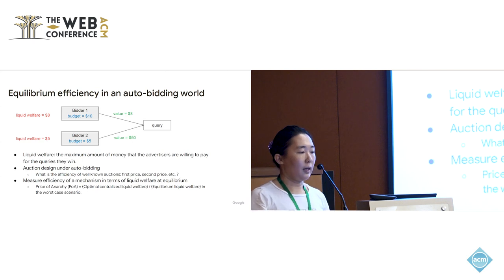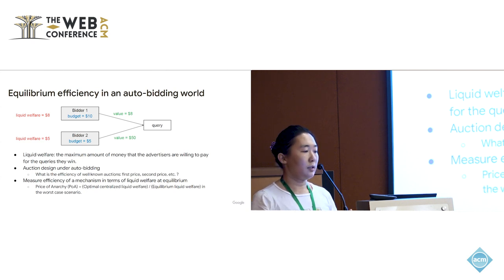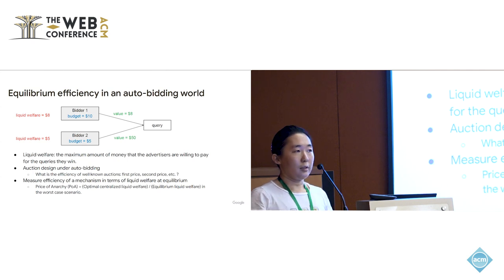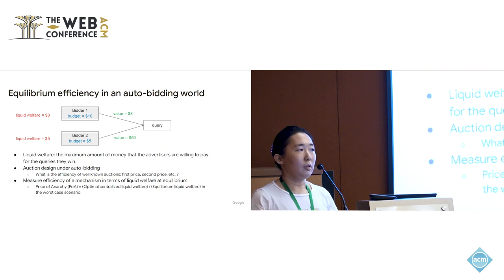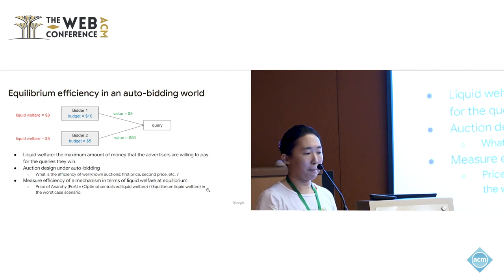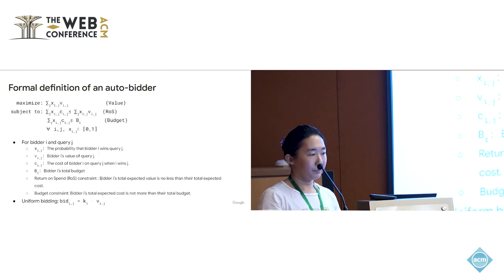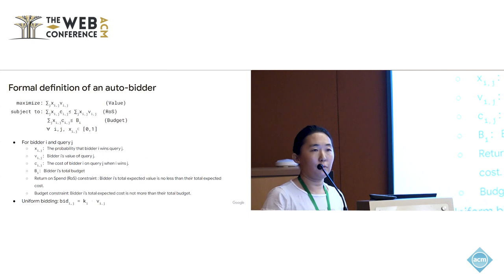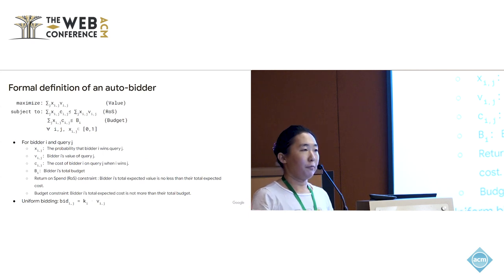In this work we study auction design under the auto-bidding setting and examine the efficiency of well-known and other auctions. To measure efficiency we use the concept of price of anarchy (POA), which is the worst-case ratio between the optimal centralized liquid welfare and the equilibrium liquid welfare. The optimal POA is one, meaning in equilibrium we always get the optimal liquid welfare allocation.